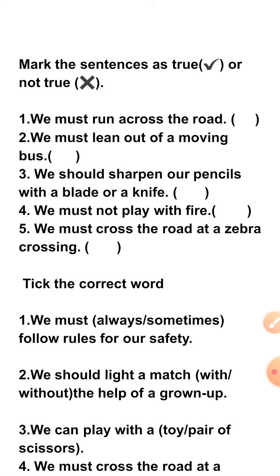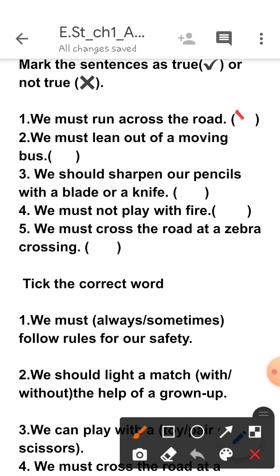Let's start. First one: 'We must run across the road.' Children, is it good to run across the road? No, so we have to put a cross in front of this. Second one: 'We must lean out of a moving bus.' Children, is it good to lean your hand or head out of a moving bus?